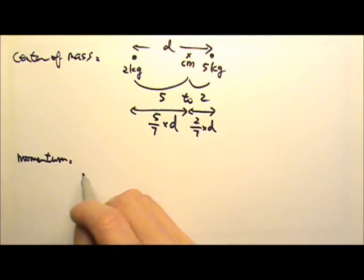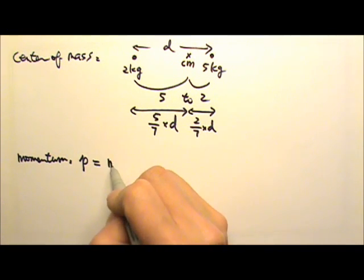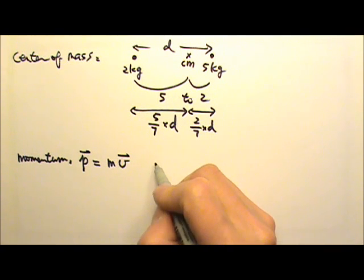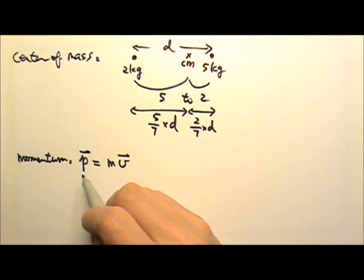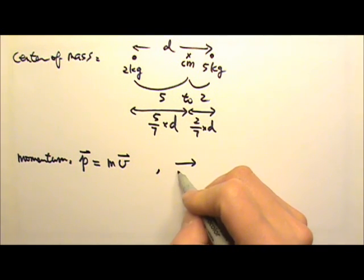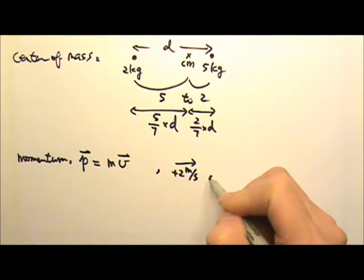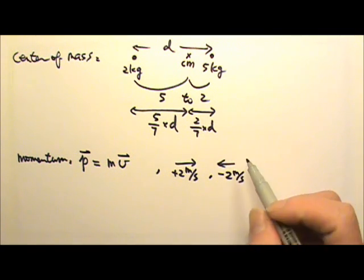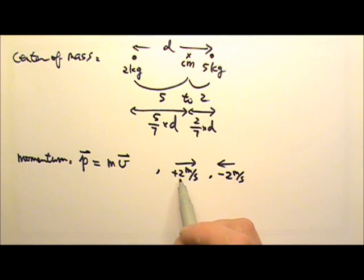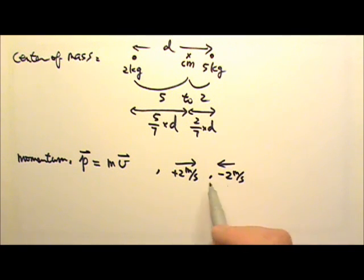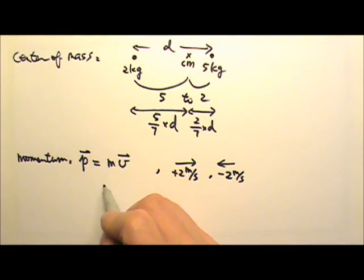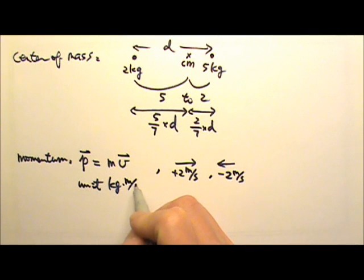Then we talked about momentum. Momentum is p, which is m times v. Velocity is a vector, and so is momentum. That means for this unit, we need to pay attention to direction. If a velocity going one way is positive 2 m/s, then the opposite direction must be negative 2 m/s. It is also OK to say to the right is negative — in that case, to the left would be positive. Opposite direction, opposite signs. The unit for momentum is kilogram times meters per second, and it doesn't have a special name.